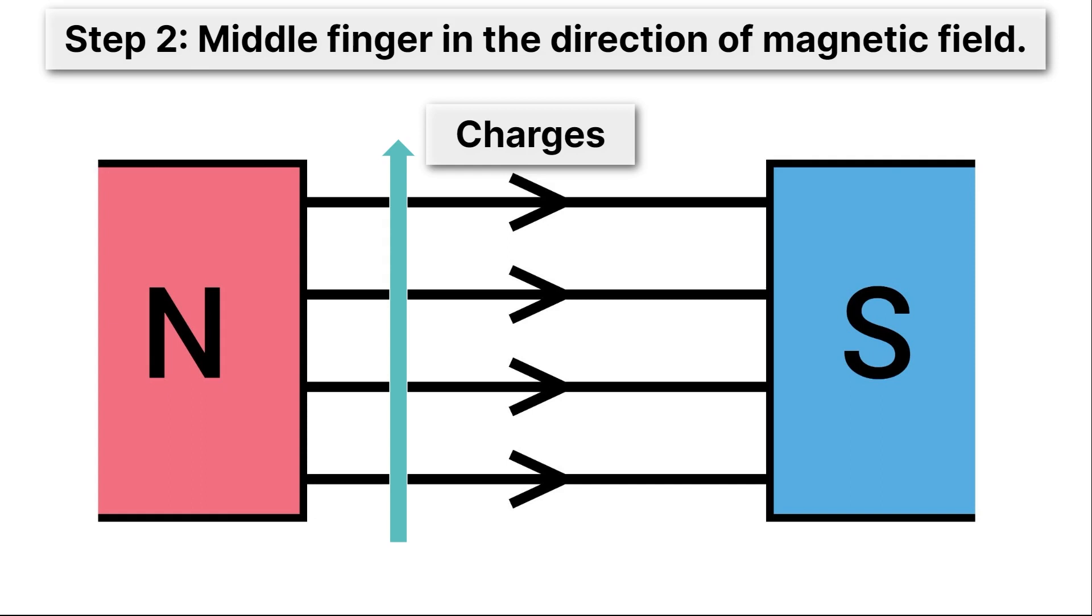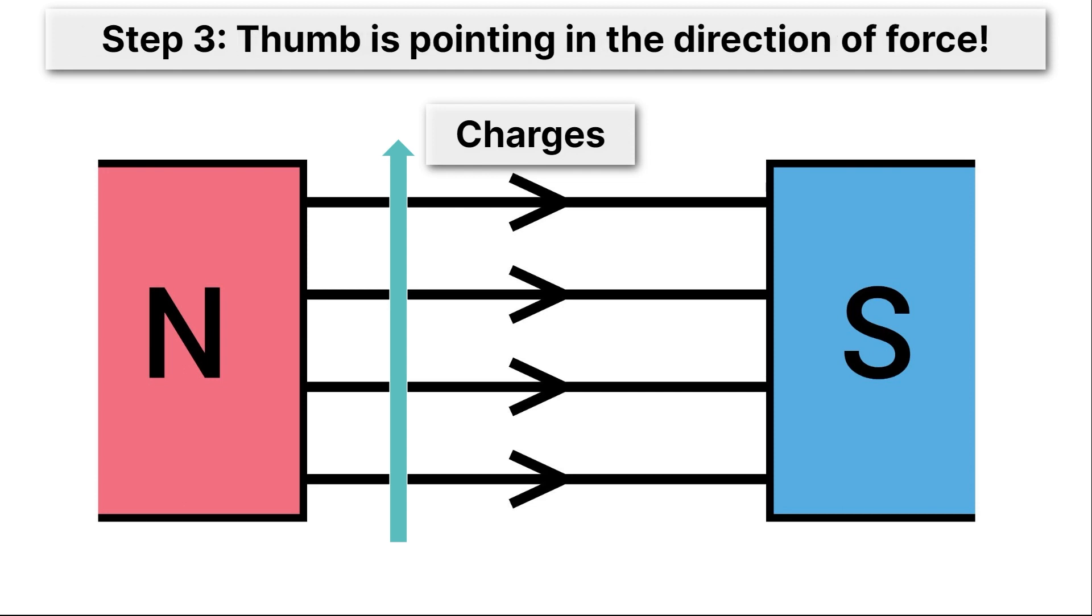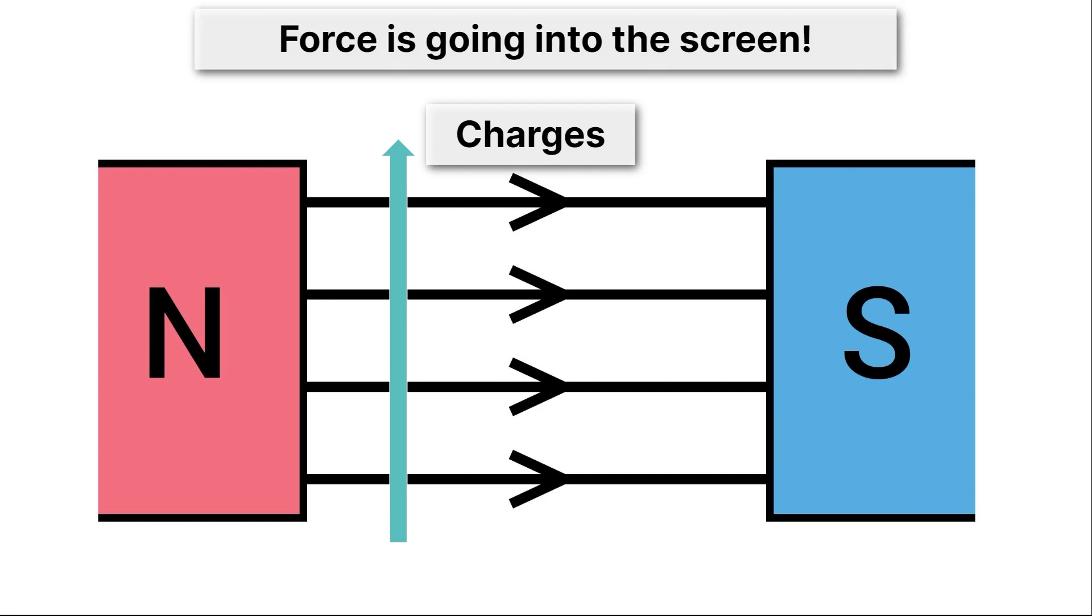Now let your middle finger point in the direction of the magnetic field. This is probably going to cause you to rotate your hand out towards the right, and your middle finger should be pointing to the right. Now your thumb is pointing in the direction of the force. It should be pointing towards the screen, if you're doing this correctly.